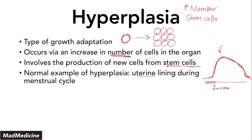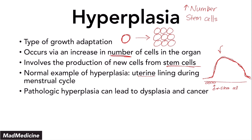When the uterine lining proliferates during the menstrual cycle before a woman undergoes menses, that is actually a normal, physiologic example of hyperplasia. Now, what is a pathologic example? A pathologic example of hyperplasia is anything that should not be happening normally. The issue with pathologic hyperplasia is that you can end up progressing to dysplasia and even cancer. This is a very common pathway of developing cancer — pathologic hyperplasia is essentially a precancerous type lesion.